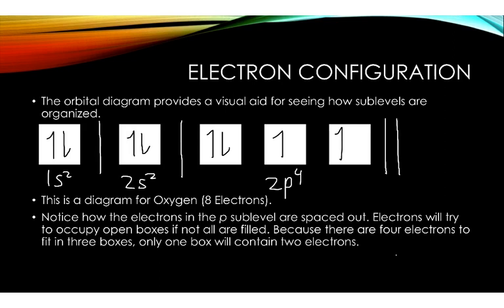I made a dash in the middle to show that they were different sub-levels. Again, those are two full boxes. Then I'm moving on to my 2p sub-level. I have 1, 2 electrons in my first box, 1 in my second, and 1 in my third. This is a diagram for oxygen because there are a total of 8 electrons. You can also find that by counting up the exponents. So I have 1s², 2s², so 2 plus 2 is 4, and then 4 plus 4 from the 2p⁴ is 8.